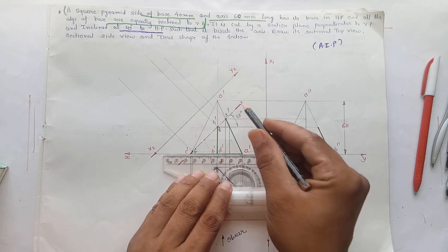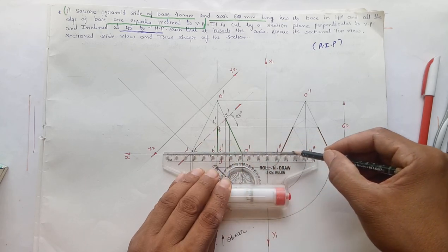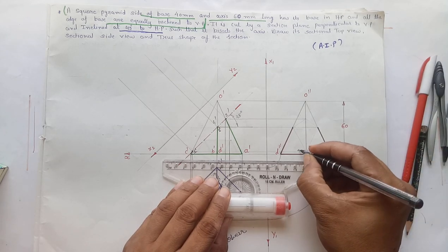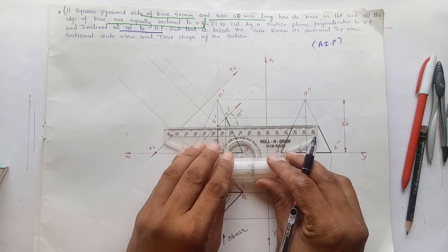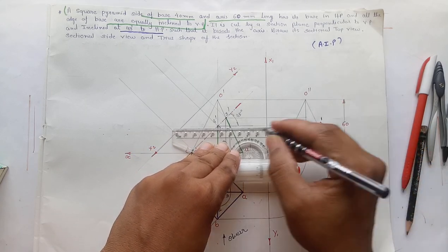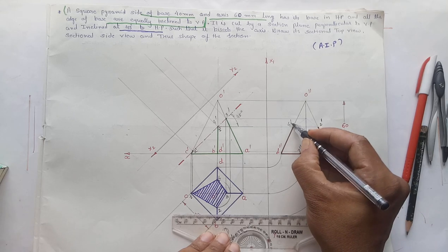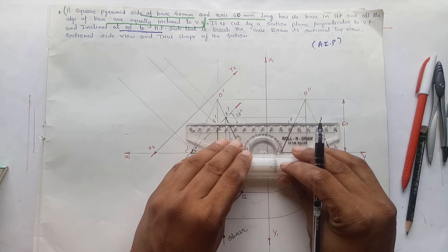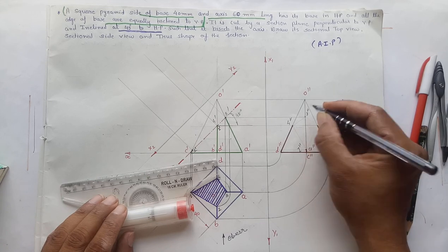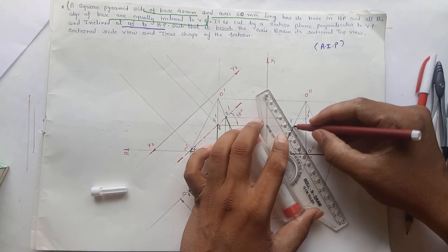To draw the section in the side view, project the points of the cutting plane: point 1 on OC slant gives 1'', point 2 on OB gives 2'', point 4 on OD gives 4'', and point 3 on OA slant gives 3''. Join these points 1'', 2'', 3'', 4'' to show the section in the side view.